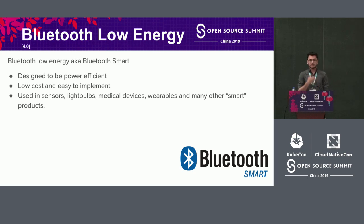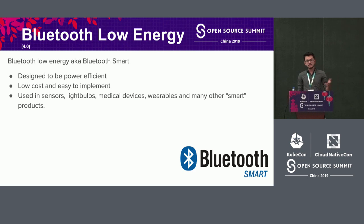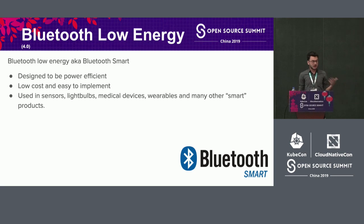Until a few years ago, Bluetooth 4.0 — or Bluetooth Smart — came into the scene. It's the power-efficient version of Bluetooth that made many amazing devices possible like fitness trackers, coffee makers, light bulbs, and medical devices. BLE is designed to be power-efficient and low-cost, which is why you can get BLE devices for as low as seven to eight dollars. BLE enables us to connect everyday things we thought wouldn't be possible — like smart shoes that count your steps and connect to your mobile application.